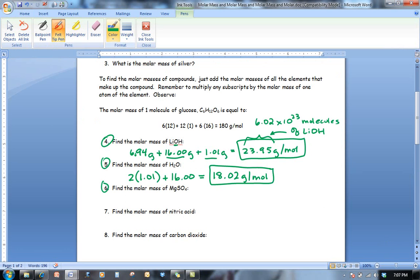All right, so here we are back in our worksheet. So to find the molar mass of magnesium sulfate, I'm going to add 24.31 plus 32.07 plus 4 times 16. And when I add all of that up, I get 120.38 grams per mole.